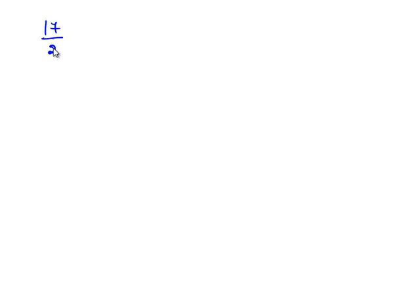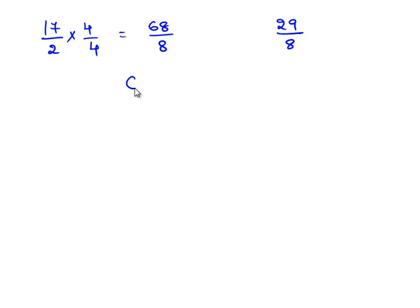Now we shall obtain the equivalent rational number for 17 by 2. To obtain the common denominator, we multiply by 4 on both the numerator and denominator, giving us 68 by 8. And 29 by 8 remains the same as it already has the common denominator. Since both rational numbers have the common denominator 8, we can directly subtract the numerators: 68 minus 29 by 8. So 68 minus 29 is 39.